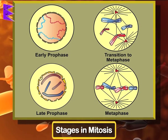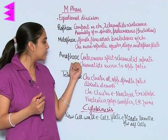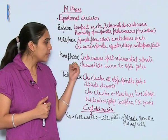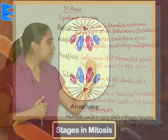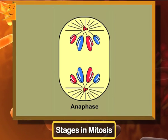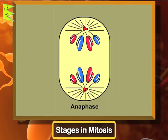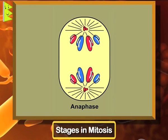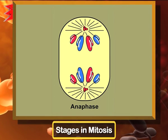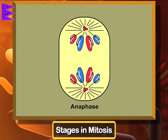The next stage is anaphase. In anaphase, centromeres split, chromatids separate, and this separation leads to the movement of chromatids towards opposite poles. You can see in the diagram how they are attached to the opposite poles.